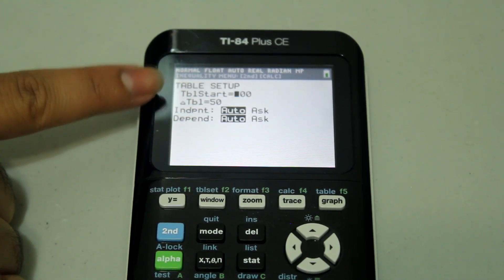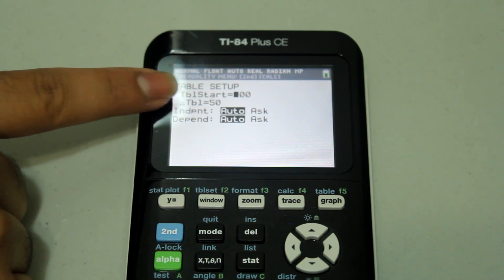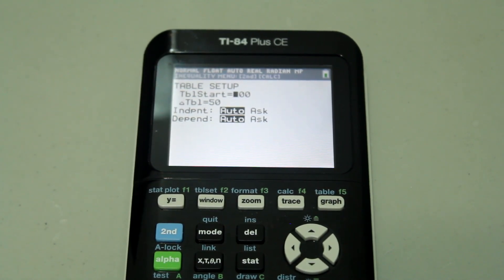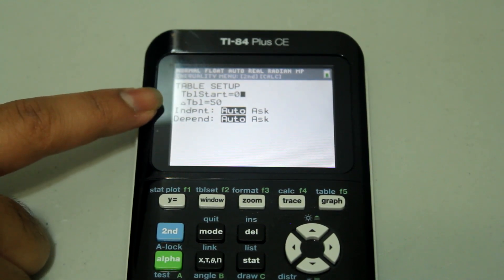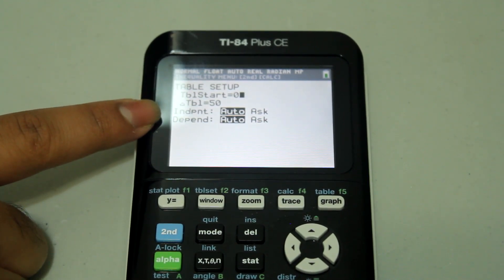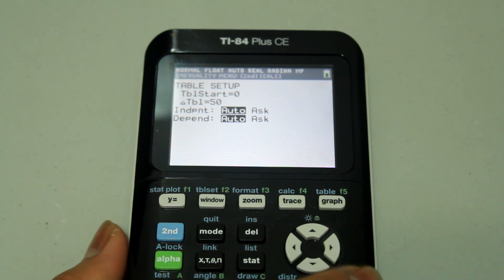Now table start is 100. I want my table start to be zero. And the delta table, which is the interval, is 50. I want that to be one.